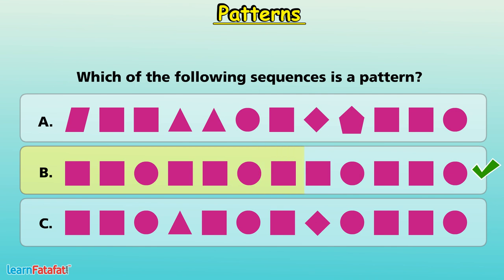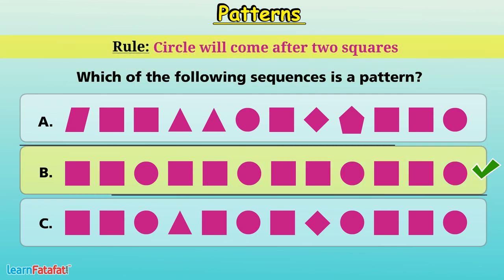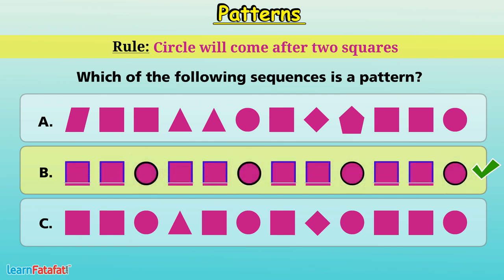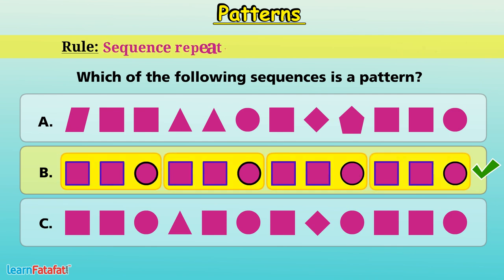Yes, sequence B will be a pattern because the rule of this sequence is a circle will come after two squares. Or, we can say the sequence repeats after two squares and a circle. In other cases, we cannot see repetition. So, they are not patterns.